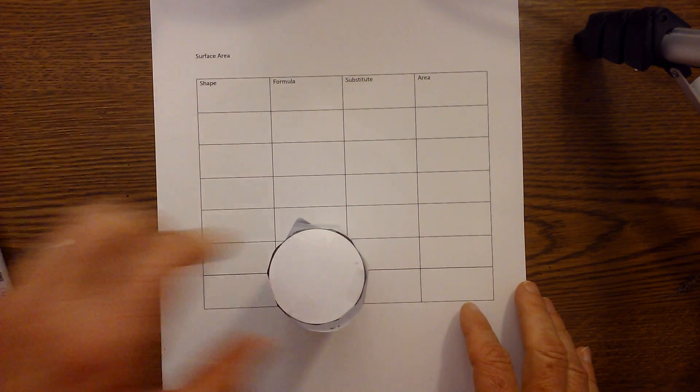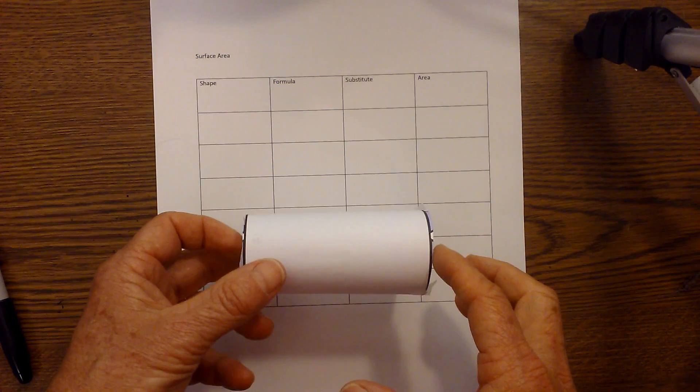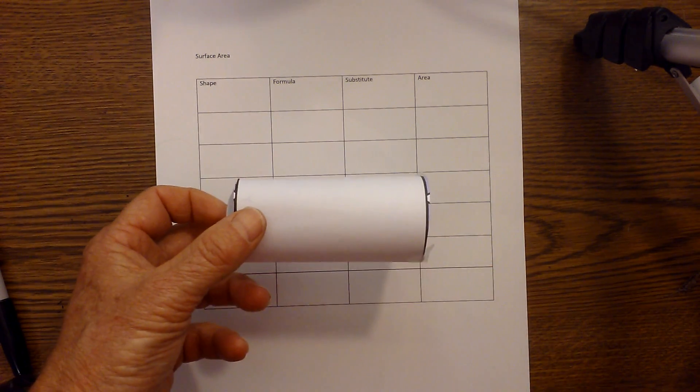So what I'd like to do first now is take the cylinder and unroll it so that you can see it unrolled.